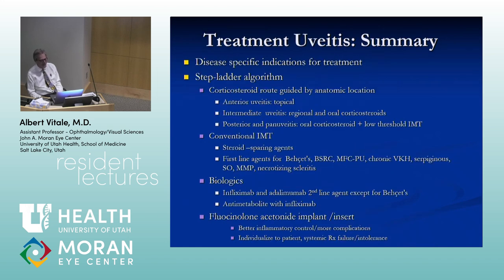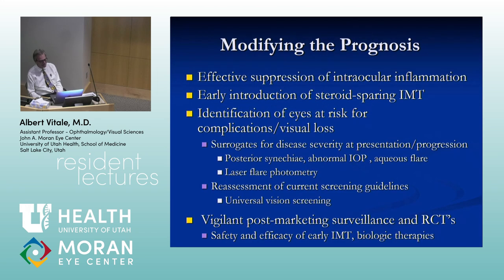In summary: there are disease-specific indications for treatment. We apply a stepladder algorithm with early implementation of steroid-sparing immunotherapy — either conventional or biologic — and there is definitely a place for long-acting implantable devices, either as primary or adjunctive therapy. With effective control, we can modify the prognosis of uveitis with the early introduction of these agents, and that will also require identifying eyes at most risk for developing acute complications, and then vigilant post-marketing surveillance with randomized controlled trials.